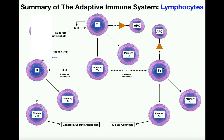The cytotoxic T cell proliferates and differentiates into two subclasses, both forming in the secondary lymphatic organ. One is called an effector cytotoxic T cell, and the other is a memory cytotoxic T cell. Memory cytotoxic T cells hold a memory of the staph aureus antigens, so if you're ever exposed again years later, your immune response the second time would be much faster.